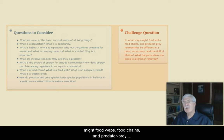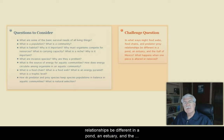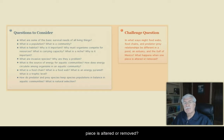And for additional consideration, here are a couple of additional questions. In what ways might food webs, food chains, and predator-prey relationships be different in a pond, in an estuary, and in the Gulf of Mexico? What happens when one piece is altered or removed altogether?